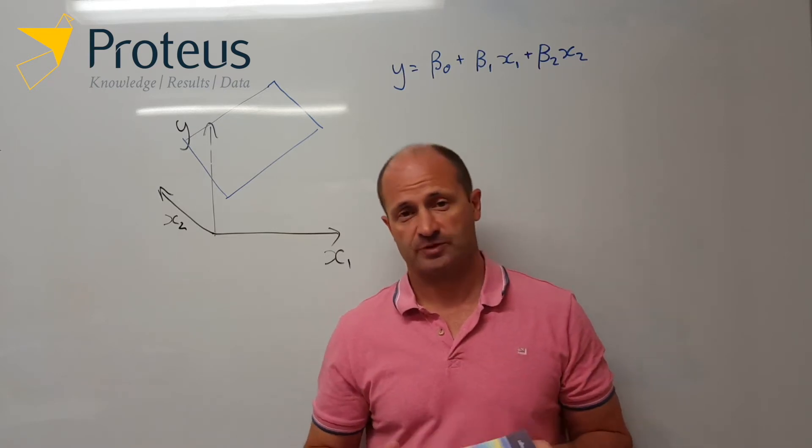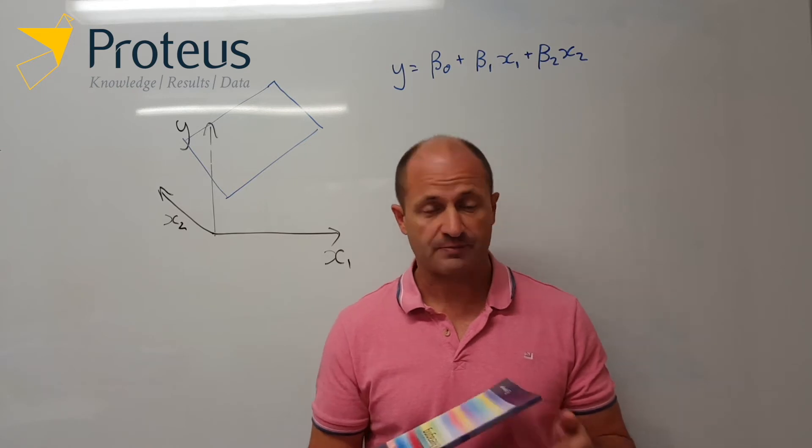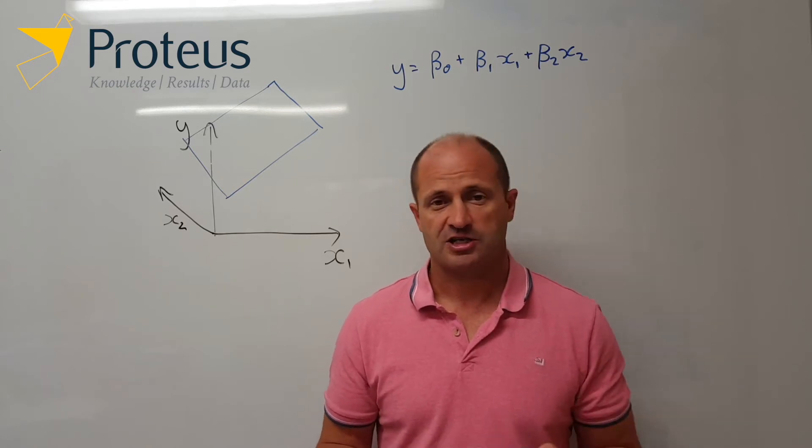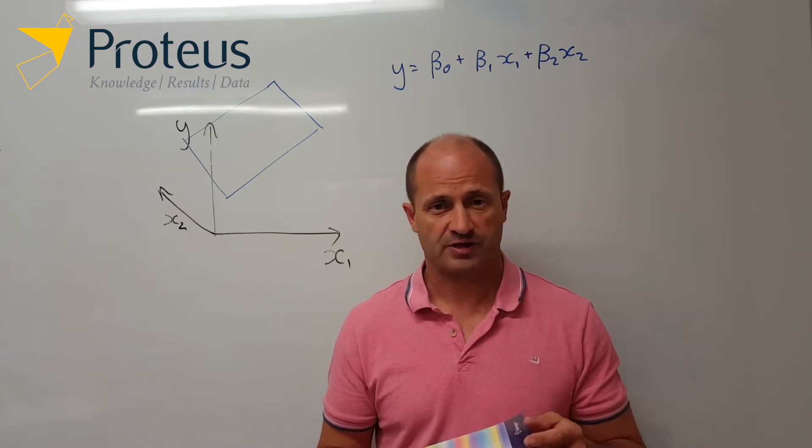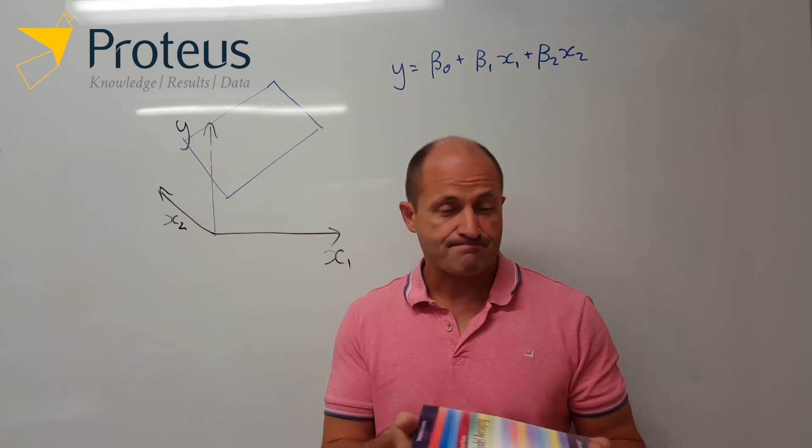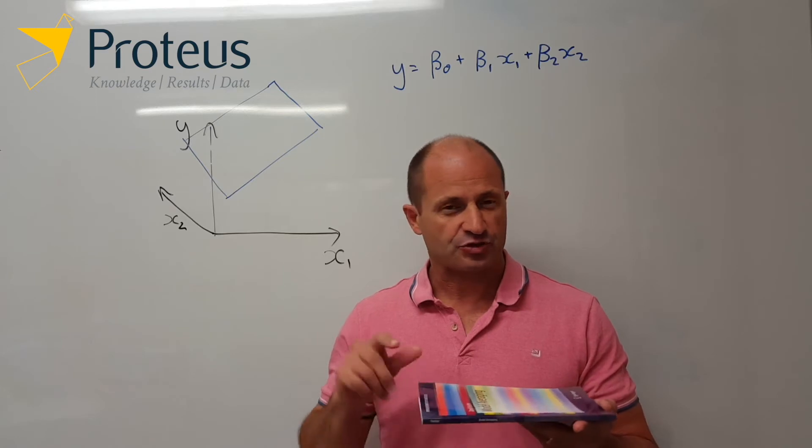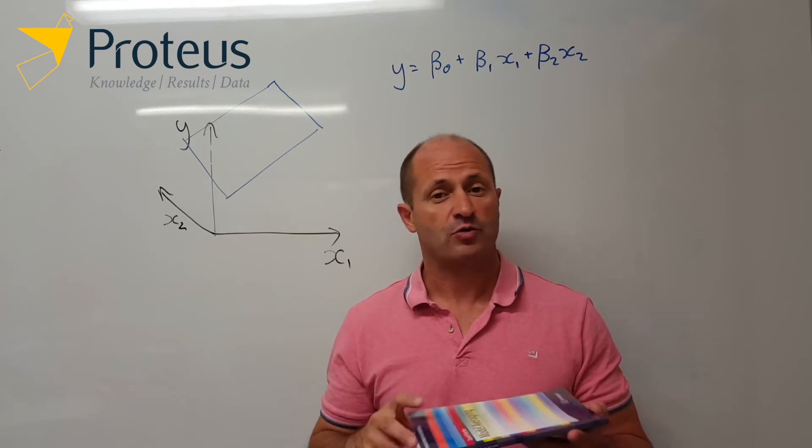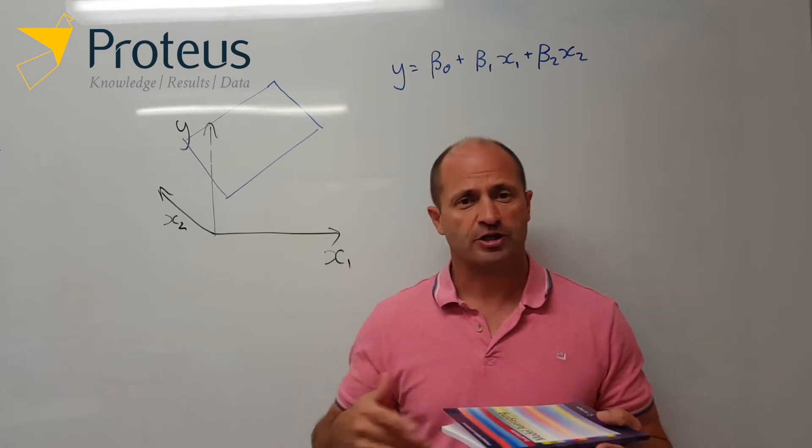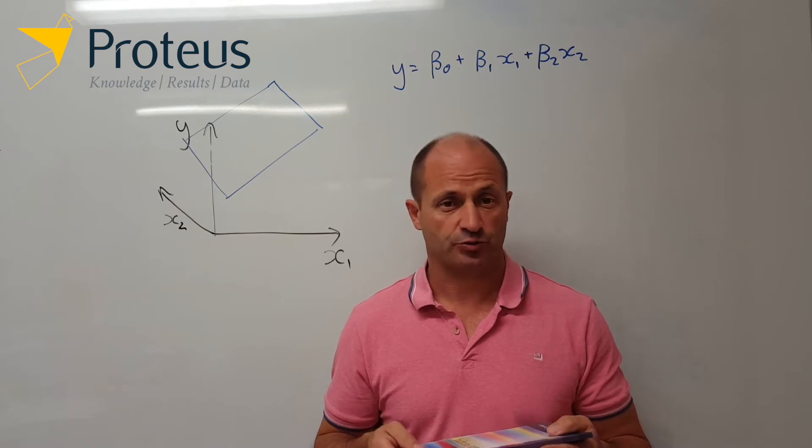Now in some situations that's not going to be reasonable. So some people advise that you shouldn't have interactions between two continuous variables, but other times it might make sense. And so having this sort of geometric interpretation of what's going on would be quite useful to try and decide should I include an interaction between two variables or not.